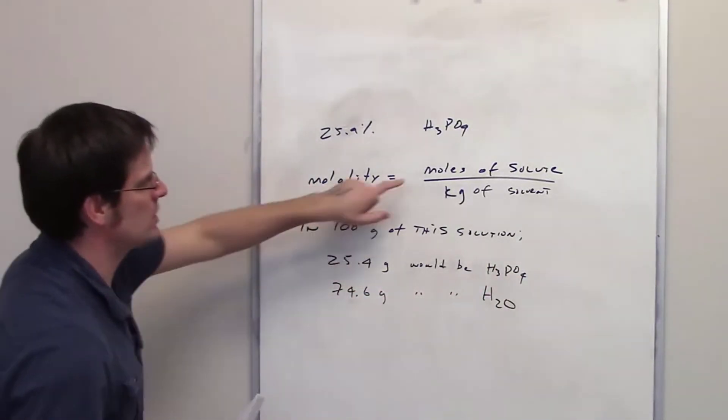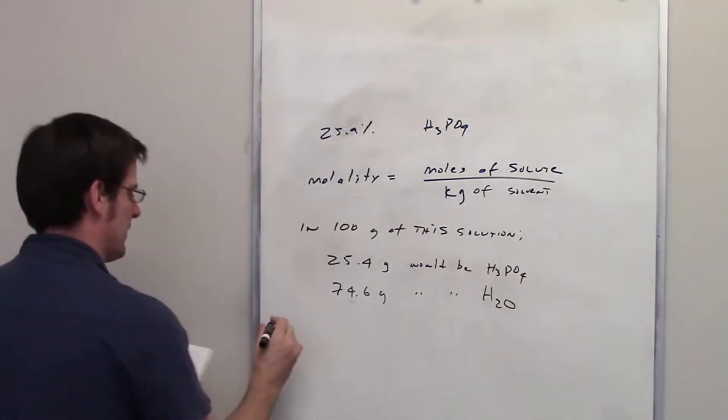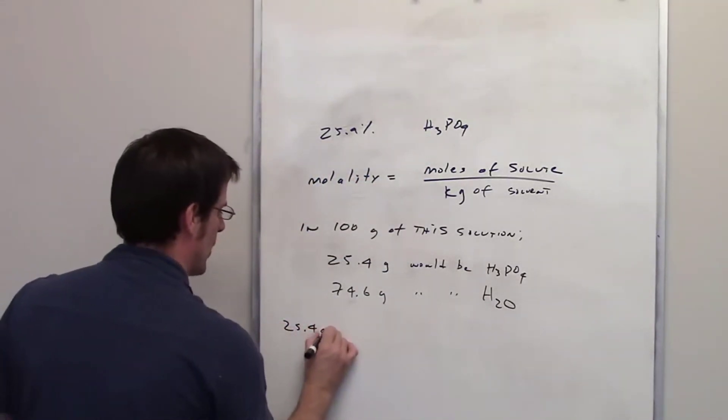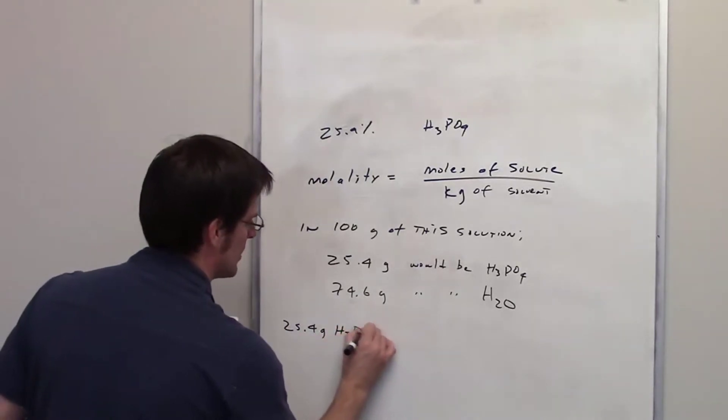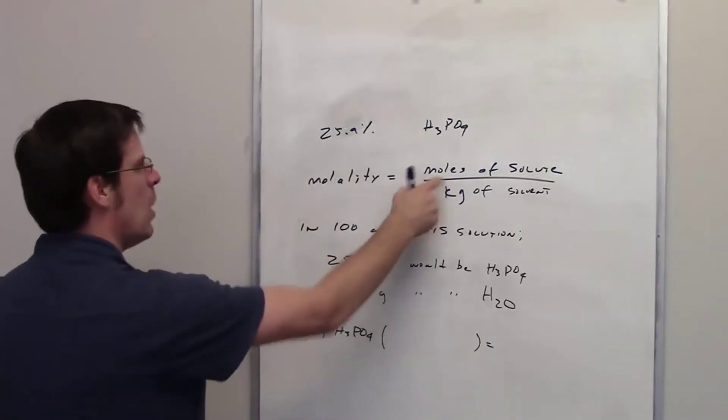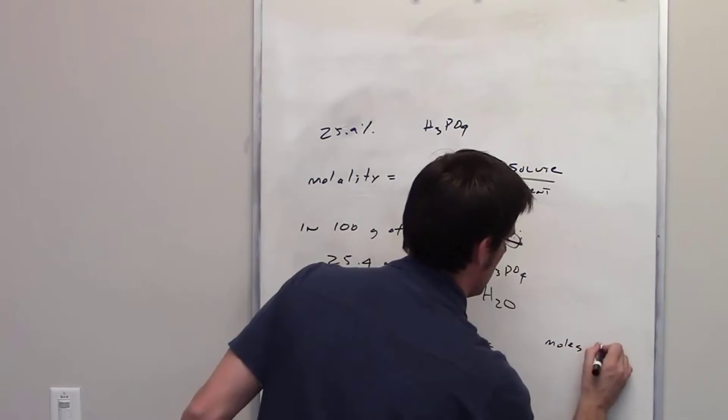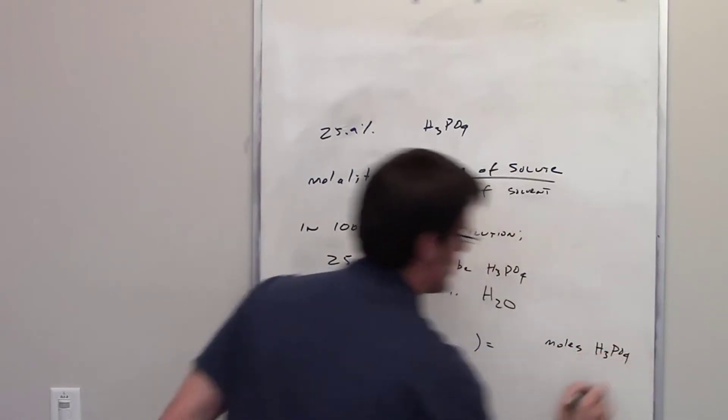Okay, so once again we're trying to determine the moles of solute divided by kilograms of solvent. So if I've got 25.4 grams of phosphoric acid in order to determine the molality, I need to determine how many moles of phosphoric acid that is, moles of H3PO4. Do you guys know how to do that?